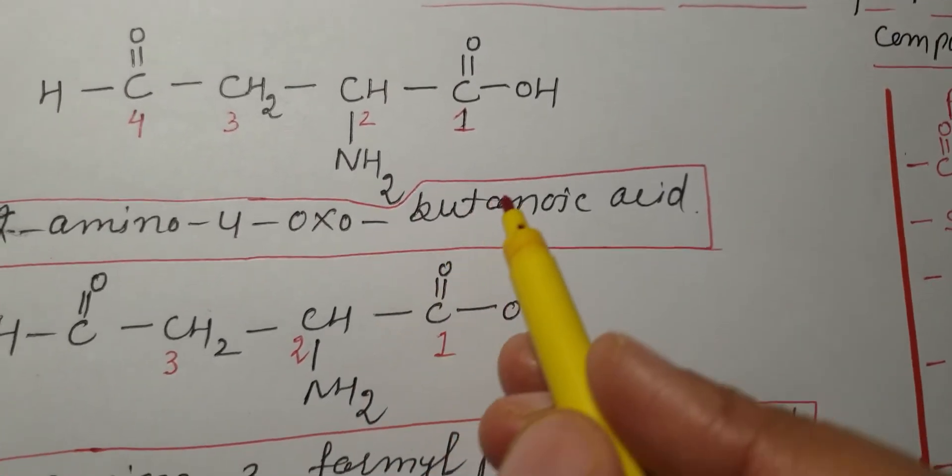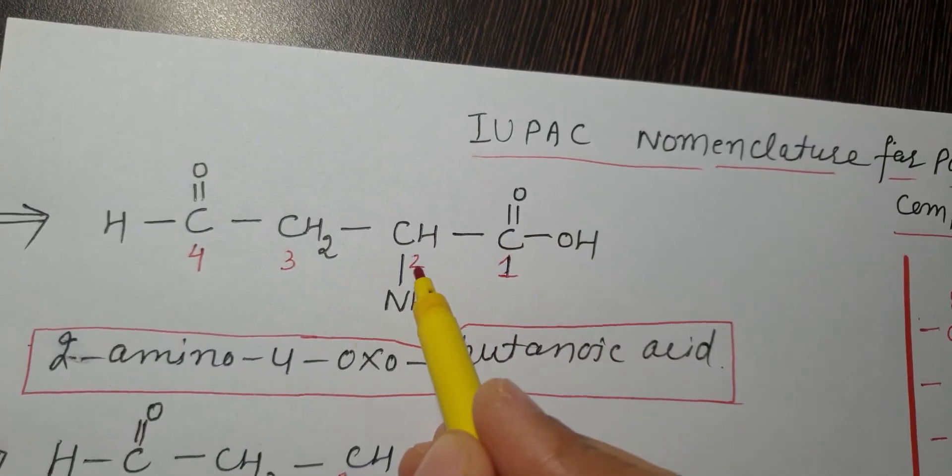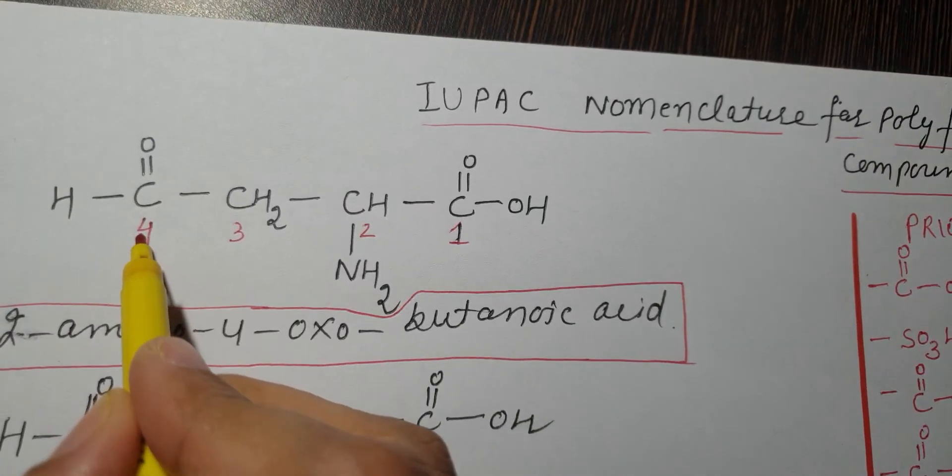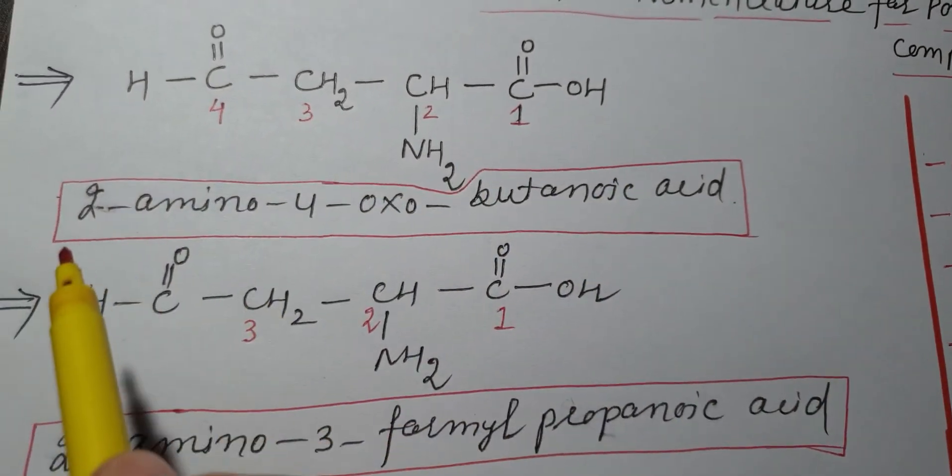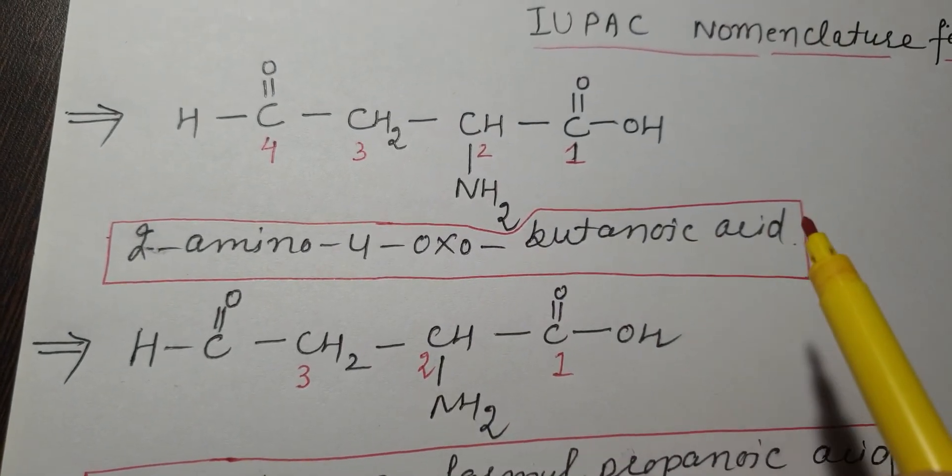So if I name this compound in this way: this is 1, this is 2, this is 3, and this is carbon 4 which is the carbon of the aldehyde group. The name becomes 2-amino-4-oxobutanoic acid.